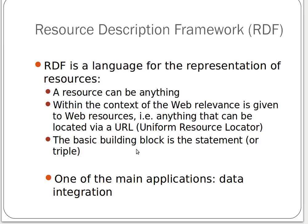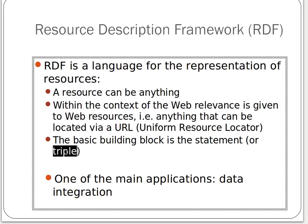Basically in RDF, whenever we want to describe a resource, the basic building block is to have a statement in the form of a triple — that is, we can describe anything using one statement that has three parts. That's why it's called a triple. Remember this: we want to use triples from now on.